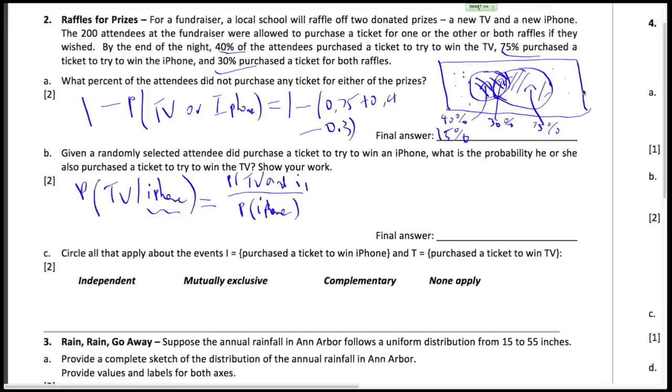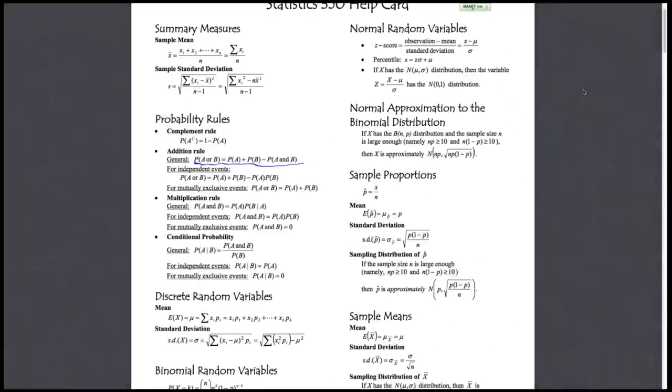And if you want to refer to the formula card, that formula is just right here. Okay, the probability where A is TV, B is iPhone, right? Probability of iPhone, probability of TV and iPhone, up here.